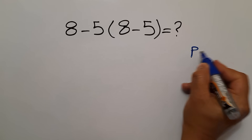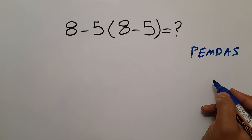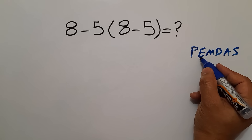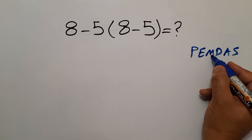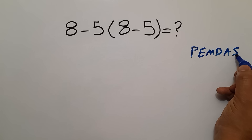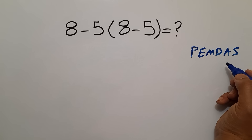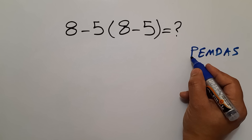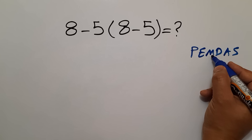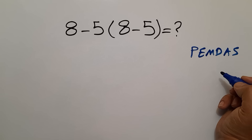P stands for parentheses, E stands for exponents, M and D stands for multiplication and division, and A and S stands for addition and subtraction. First, we have to do parentheses, then exponents, then multiplication and division, and finally addition and subtraction.